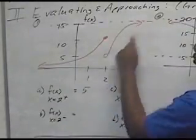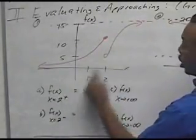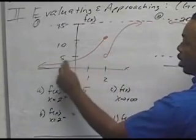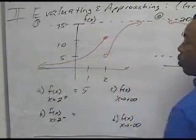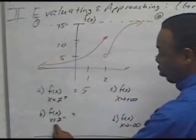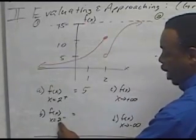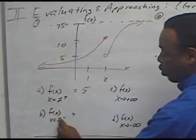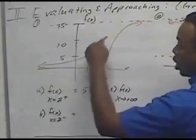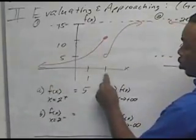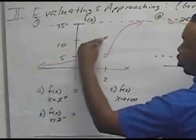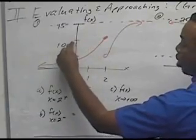As I follow the graph from the right side trying to get to x equals 2, I land at the height of 5. Now, what is f(x) as you travel the function from the left? If I travel the function from the left using this piece until I get to 2, I'm now at the level of 10.